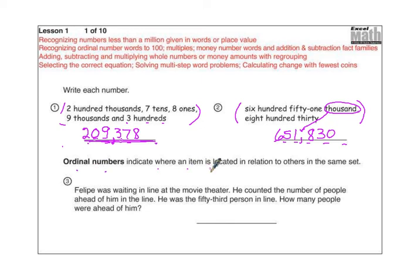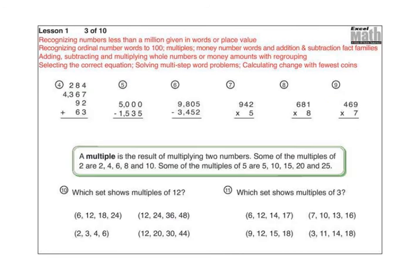Ordinal numbers indicate where an item is located in relation to others in the same set. Felipe was waiting in line at the movie theater. He counted the number of people ahead of him in the line. He was the 53rd, there's the key term right there, person in line. How many people were ahead of him? Well, if he's 53rd person in line, how many people are in front of him? Go ahead and write your answer. See if you can beat me before I write it. Okay, the answer would be 52. And then we put a label with this type of an answer because it's a word problem. So you should put the word people after that.